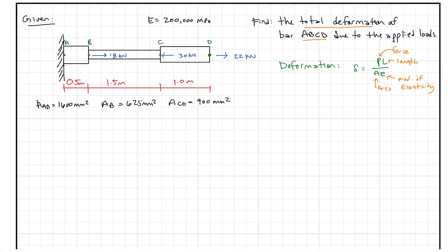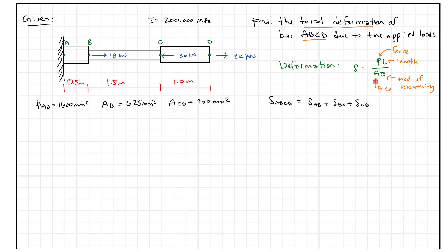For the total bar ABCD, the total delta is going to be the sum of the parts: delta AB plus delta BC plus delta CD. We're given the areas, the lengths, and the modulus of elasticity. So what we really need to do is apply this deformation equation correctly, get our units right, and figure out what these forces are — those are key to the whole problem.